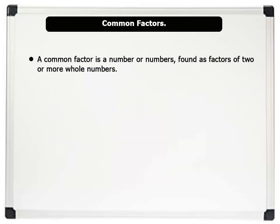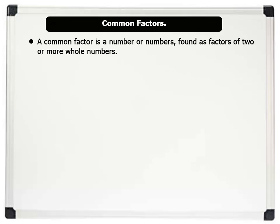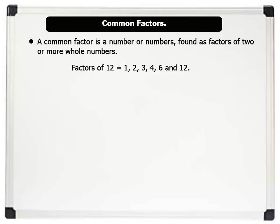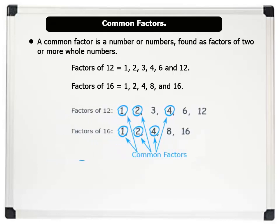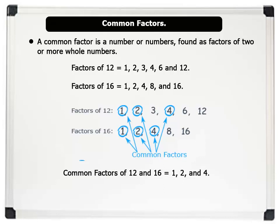A common factor is a number, or numbers, found as factors of two or more whole numbers. For example, factors of 12 are: 1, 2, 3, 4, 6, and 12. And factors of 16 are: 1, 2, 4, 8, and 16. Notice that the factors circled in blue are common to both 12 and 16. Therefore, the common factors of 12 and 16 are: 1, 2, and 4.